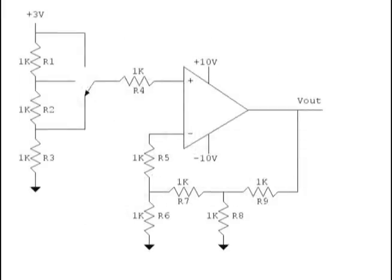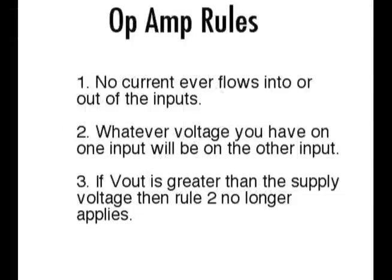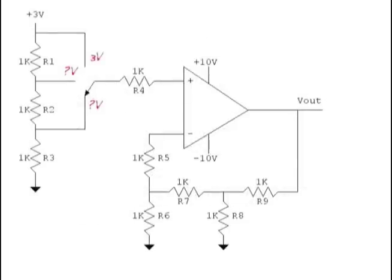Here we have a fairly complicated looking op-amp circuit with a voltage divider for the input and a very strange looking feedback network. The first order of business is to look at the input. We can see we have three volts going to three 1K resistors, so it looks like a plain voltage divider. But it's hard to tell because we don't know what the current is going from the three volt supply through R1, through R2, and then into the op-amp circuit with that switch closed. So we have three volts on the top tap, two volts on the middle tap, and one volt at the bottom tap of the switch.